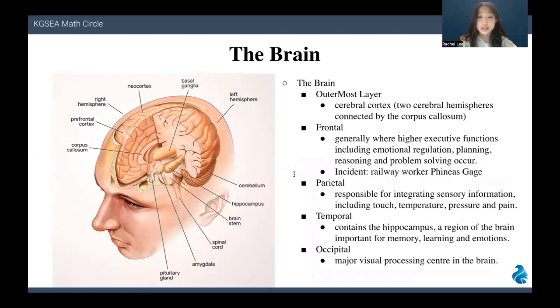The brain's cerebral cortex is the outermost layer that gives the brain its characteristic wrinkly appearance. The cerebral cortex is divided lengthwise into two cerebral hemispheres connected by the corpus callosum. Traditionally, each of the hemispheres has been divided into four lobes: the frontal, parietal, temporal, and occipital. The frontal lobe is generally where higher executive functions including emotional regulation, planning, reasoning, and problem solving occur.